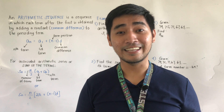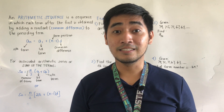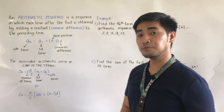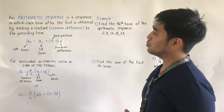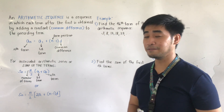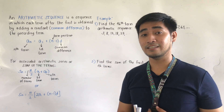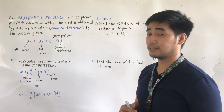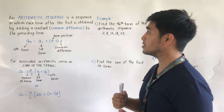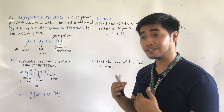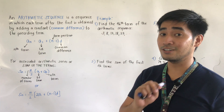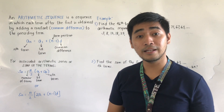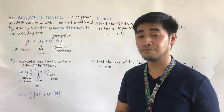To start with, let's begin with arithmetic sequence and series. An arithmetic sequence is a sequence in which each term after the first is obtained by adding a constant — that constant is what we call the common difference — to the preceding term.